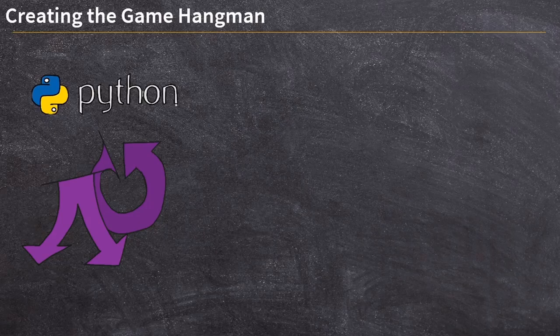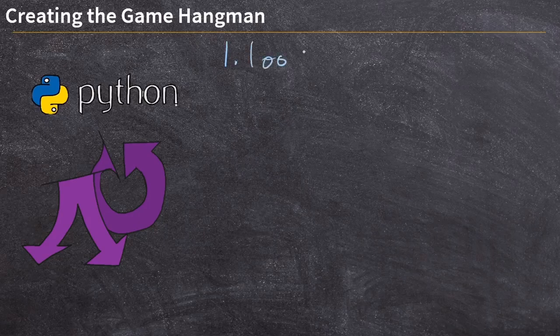First, let's talk about our pseudocode and how this hangman game is going to work. I've already thought through this and built it out, so I'm going to talk you through the process. The first thing that needs to happen is we need to loop through the maximum number of turns. So thinking about hangman — how many turns or how many wrong guesses can you get?